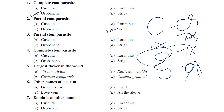For partial stem parasite, Loranthus is the example. For complete stem parasite, Cuscuta (also called Amarbel) is the example. Cuscuta has several other names which are also very important.